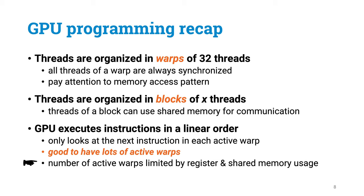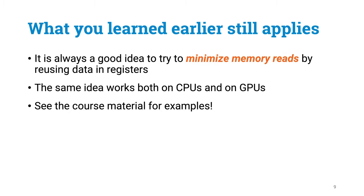Using lots of registers or lots of shared memory can be bad, as there are only limited resources in the GPU — you can't have many active blocks if each block uses lots of shared memory, or if each thread uses lots of registers. Many ideas from CPU programming still apply here; for example, it is always a good idea to minimize memory reads by reusing data in registers. But now you have an extra degree of freedom: do you use as many registers as possible, even if it means fewer active warps? Have fun experimenting, and see you next week.